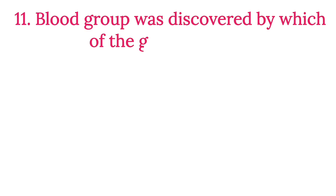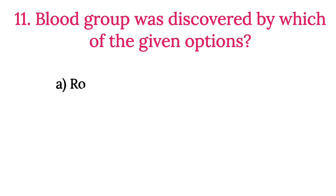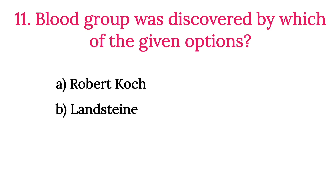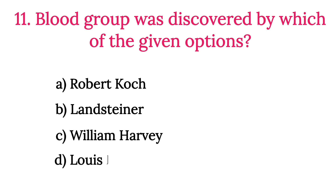MCQ Number 11: Blood groups were discovered by which of the given options? Option A: Robert Koch. Option B: Karl Landsteiner. Option C: William Harvey. Option D: Lewis Foster. The correct option is Option B, Karl Landsteiner.